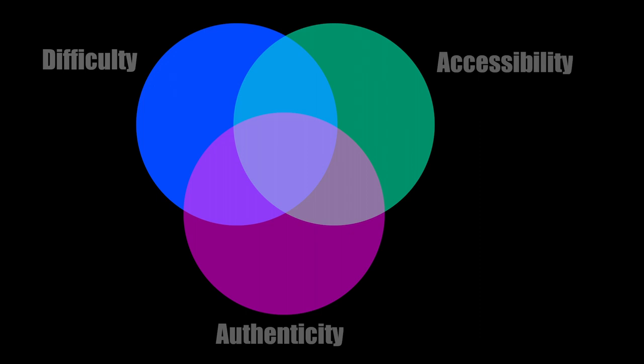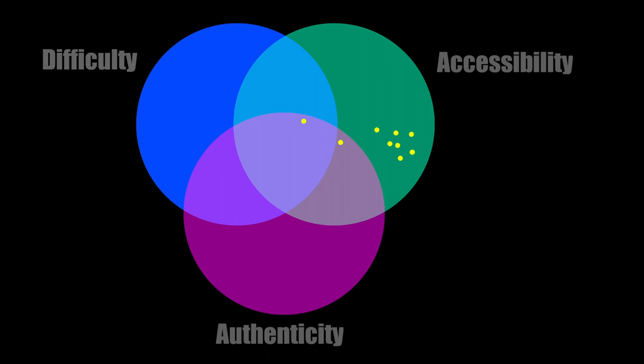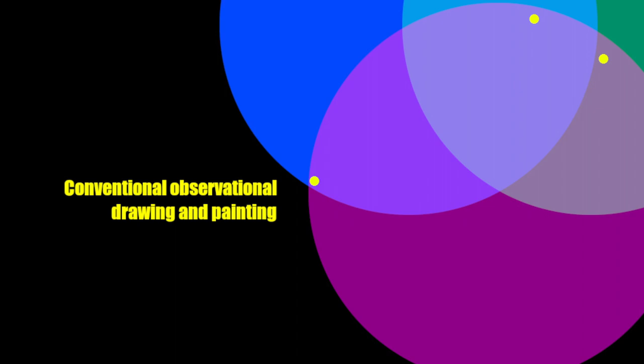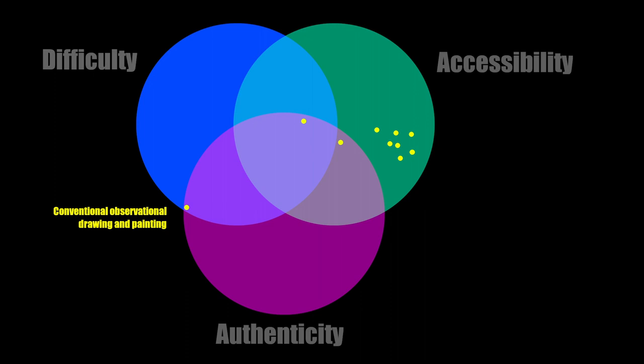This is a diagram I drew up while putting my doctorate presentations together. In it we've got difficulty, accessibility, and authenticity. What this allows me to do is place the camera lucida and the camera obscura and all the other optical painting aids somewhere on this graph. Although they make the skills of drawing and painting accessible, they lack something in the way of authenticity. Down here is conventional observational drawing and painting — very authentic — and with authenticity you get fascination, but cracking those skills open is so difficult. You really need something right here in the sweet spot. And so far, what we've seen is that the comparator mirror sits in exactly that position.